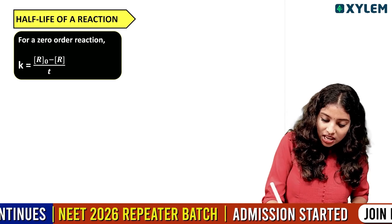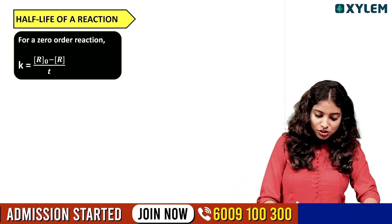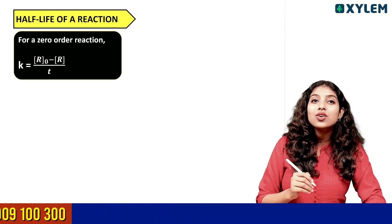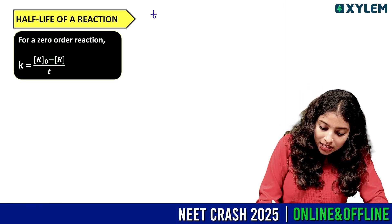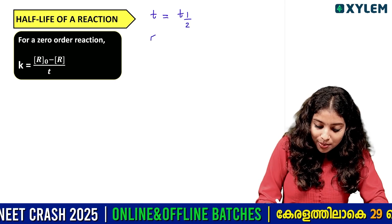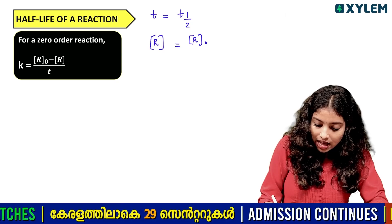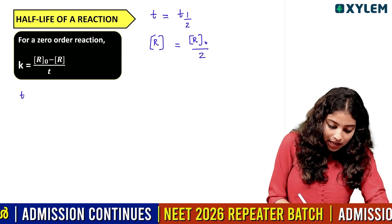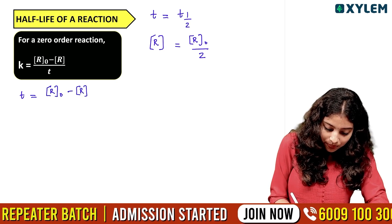So, what do we know about T-half derivation? This is a short question. If we know a zero-order reaction, the rate constant equation is K is equal to R₀ minus R divided by T. So, how do we know T? T-half is the time at which the final concentration is known, and the initial concentration is R₀.